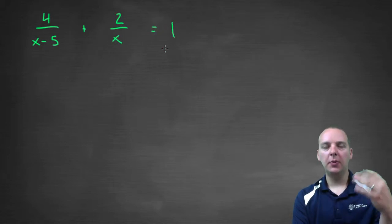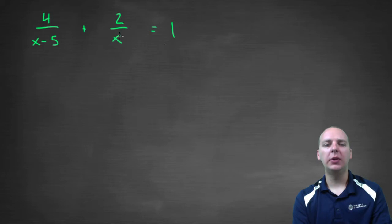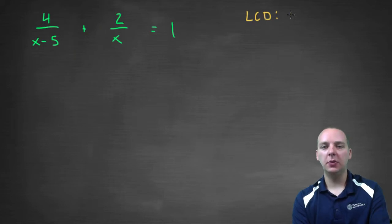So now we're going to bring back up in our mind how we solve rational equations like this. And first thing we do is we have to get rid of the fractions by multiplying both sides by the LCD. The LCD of these two rational expressions here would be X times X minus five. We're going to multiply that LCD on the left side and the right side.